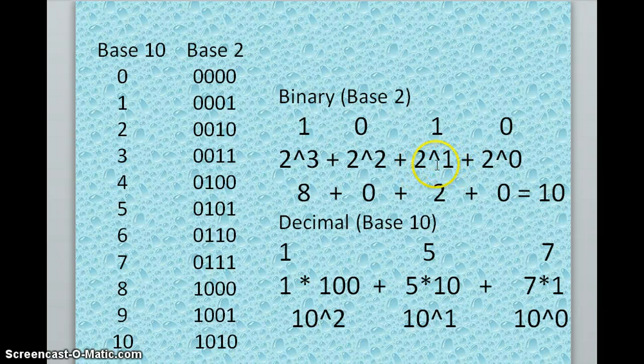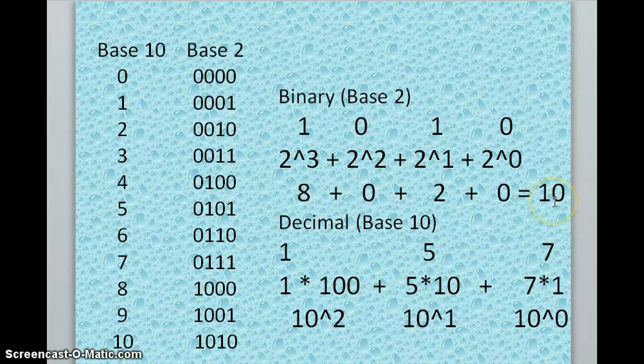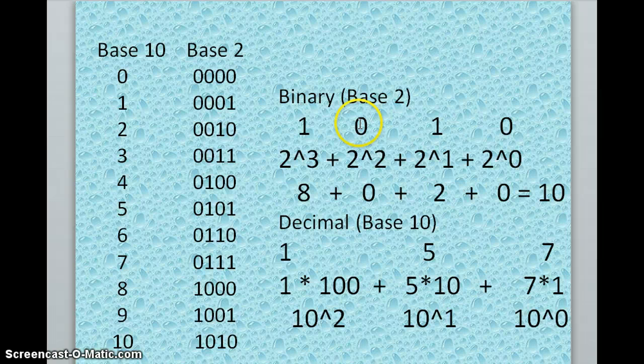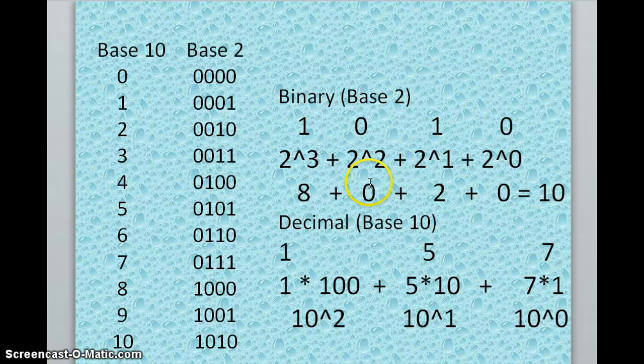The next one, there is a one, so we know that we need to use this power and add it to find our decimal value in the grand total. Now let's say 2 to the 1 is 2, so we're going to add that to whatever else we have. Once again, this is not being used, so instead of being four, it will be zero and will not be added to the total.